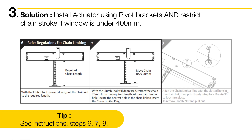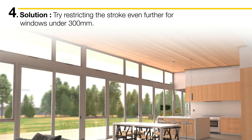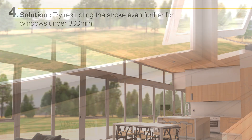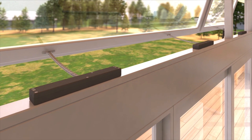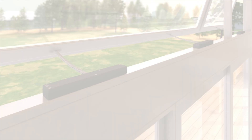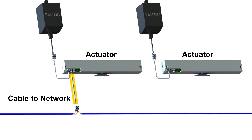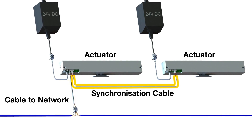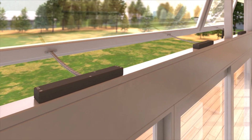See steps 6, 7 and 8 in the install instructions for details on restricting the actuator chain stroke, or check with the installer if this has been done. If the window sash is shorter than 300 millimetres, there is no guarantee the actuator will work, but it might if you restrict the chain even further. Lastly, if you're experiencing a window obstructed error and you have two actuators connected to the same window sash, make sure that only one of the two actuators is connected onto the network cable, and you have a synchronisation cable connecting the two actuators. This will ensure both actuators travel at the same speed and do not twist the sash.